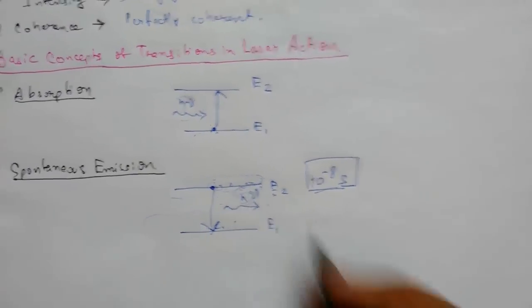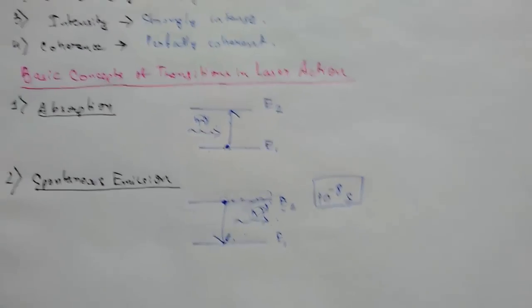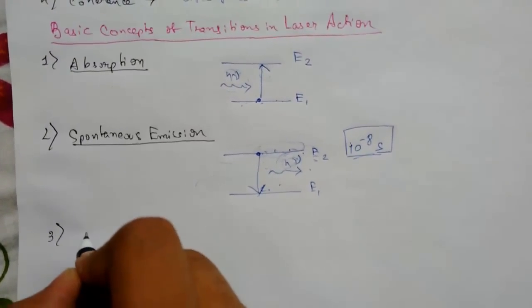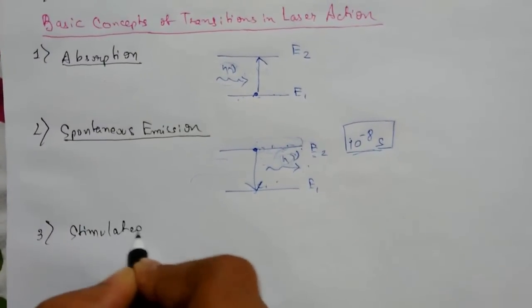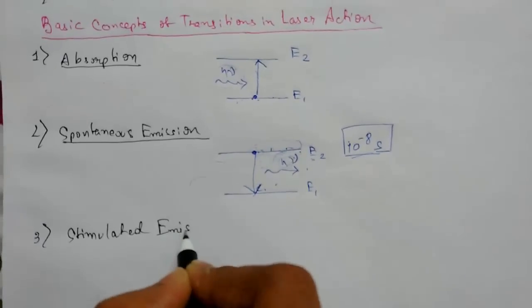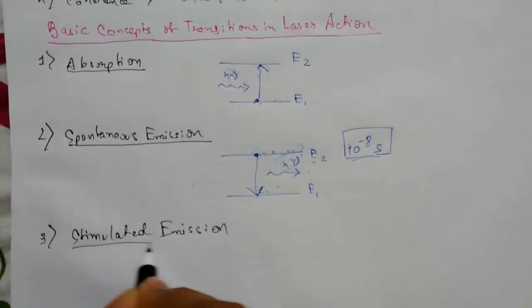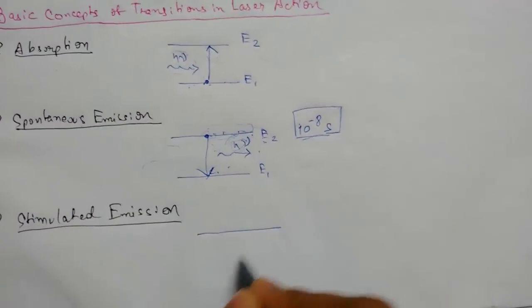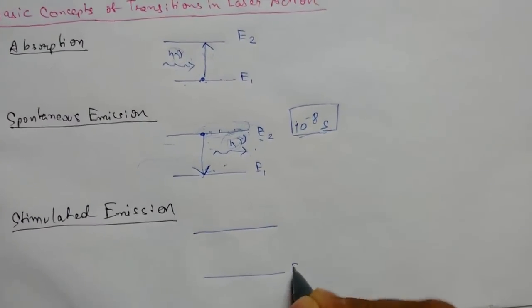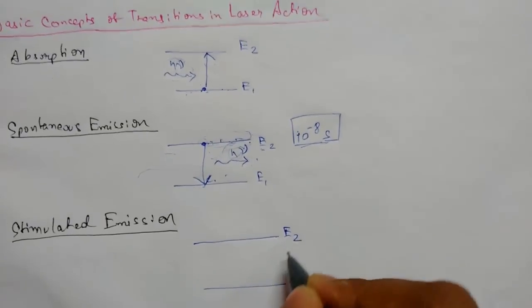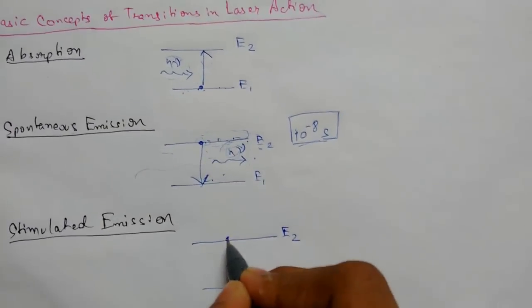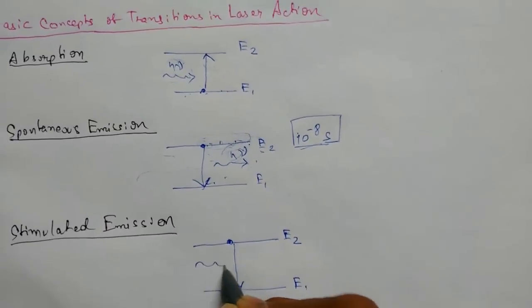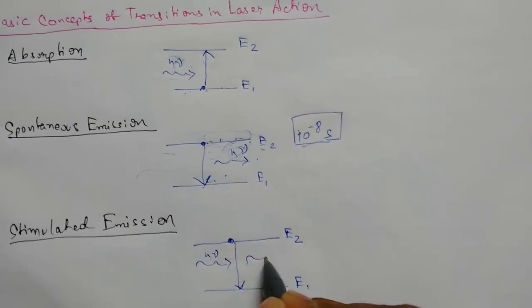Number three, we have the process of stimulated emission. Again I will draw a figure with energy level diagram E1 and E2. Emission means higher to lower. A photon is incident and more photons are released.